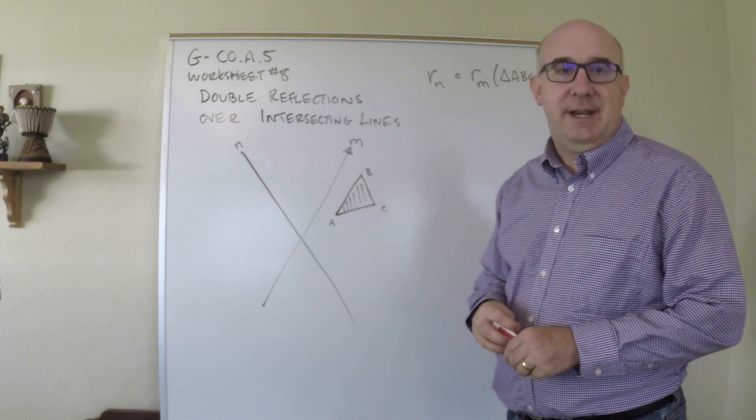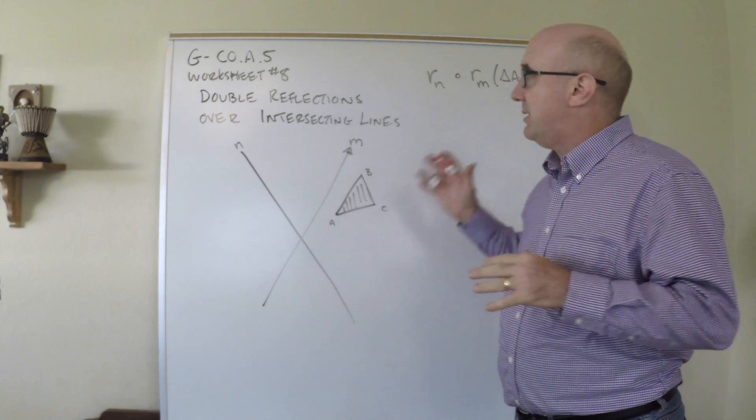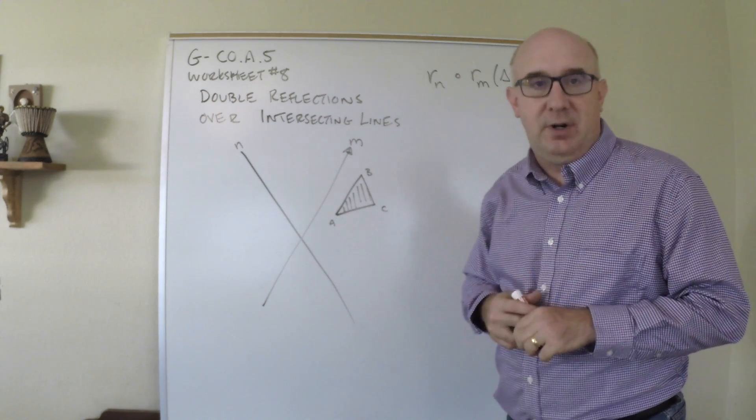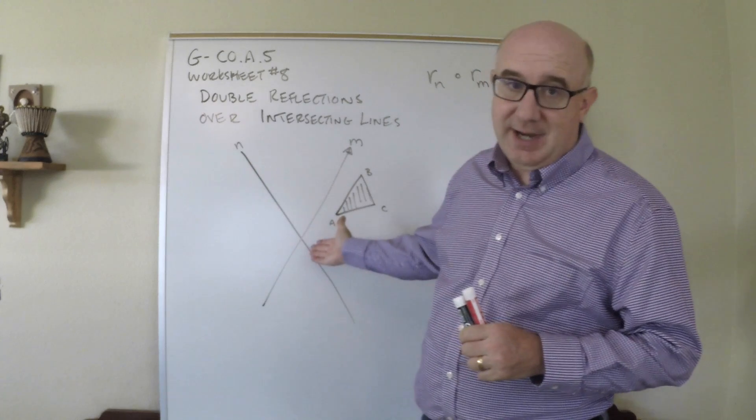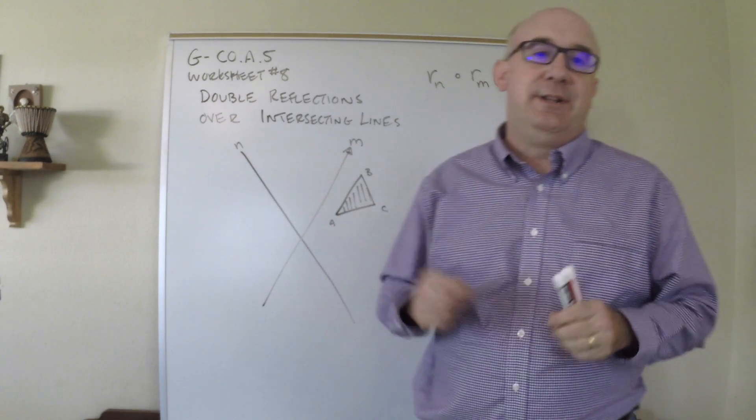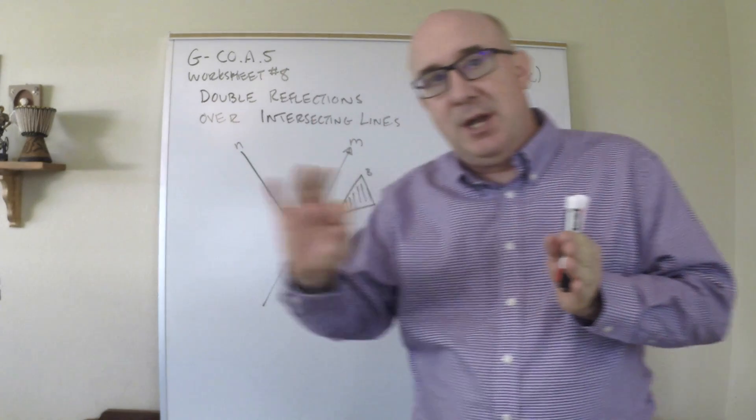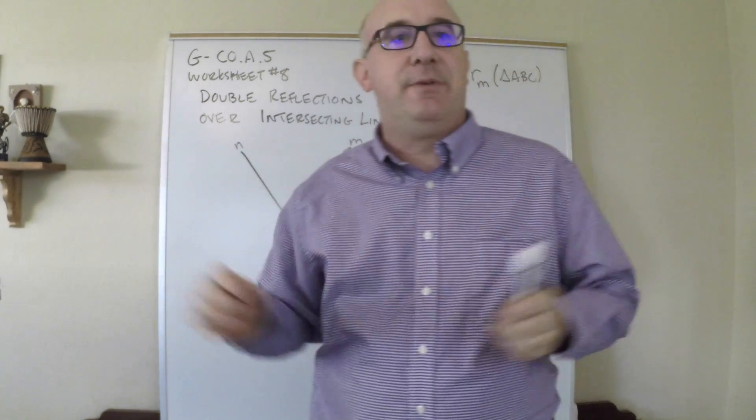Let's take a look at the same worksheet but this time thinking more about double reflections over lines that intersect instead of those that are parallel. So we learned that the double reflection over parallel lines moves things in this beautiful translation type of relationship.